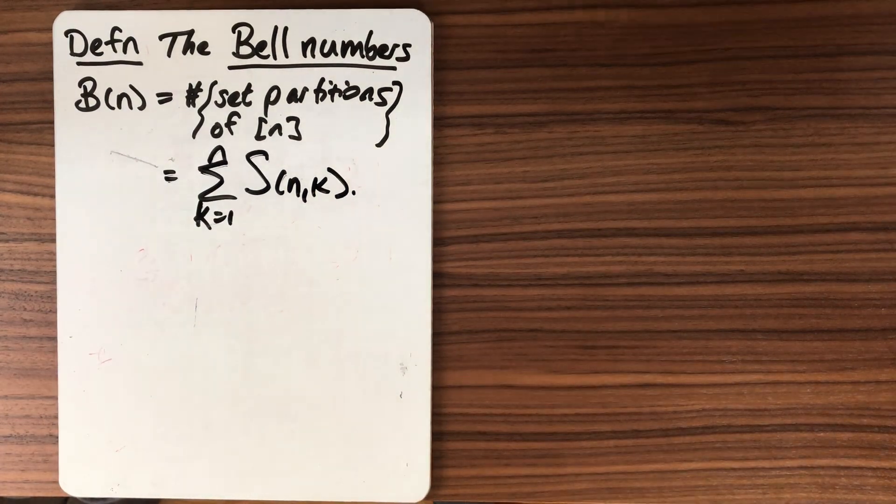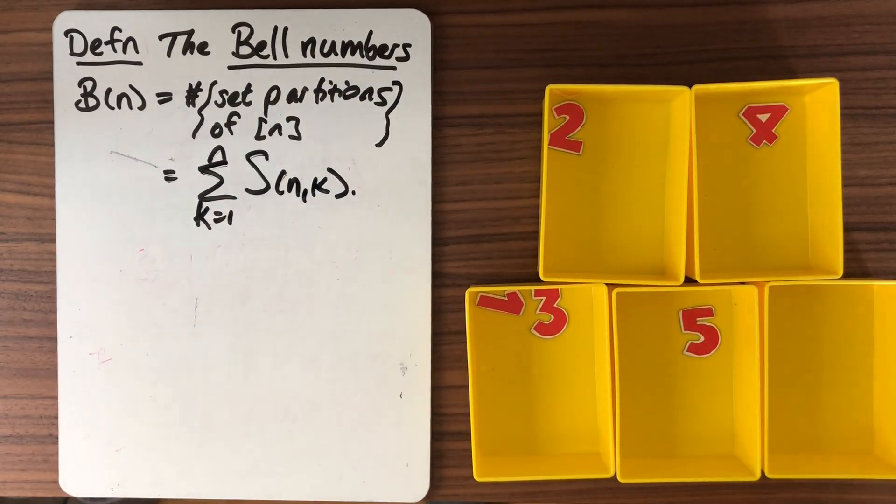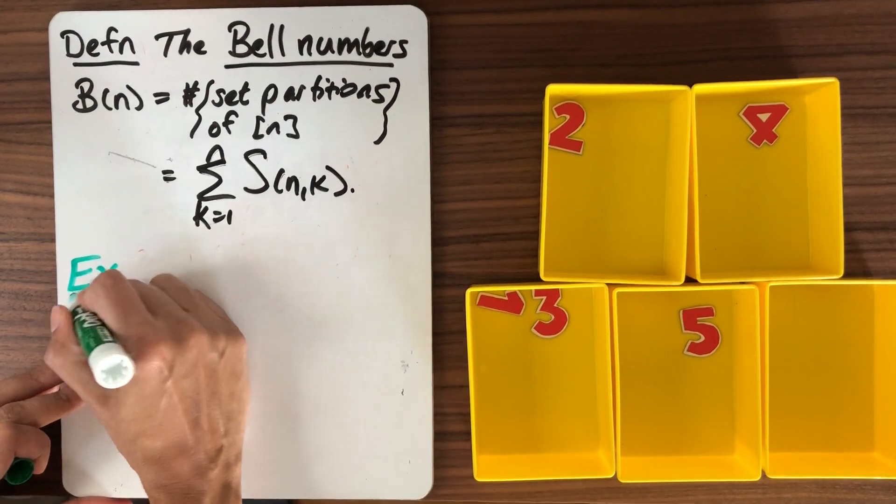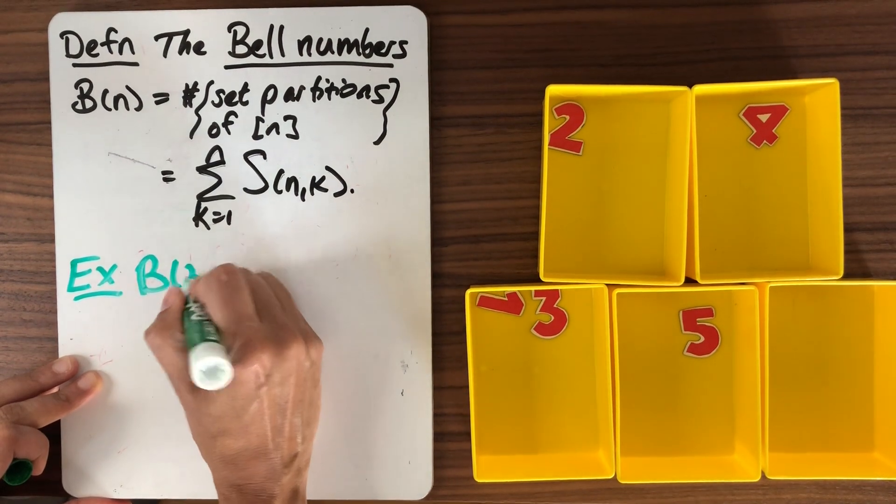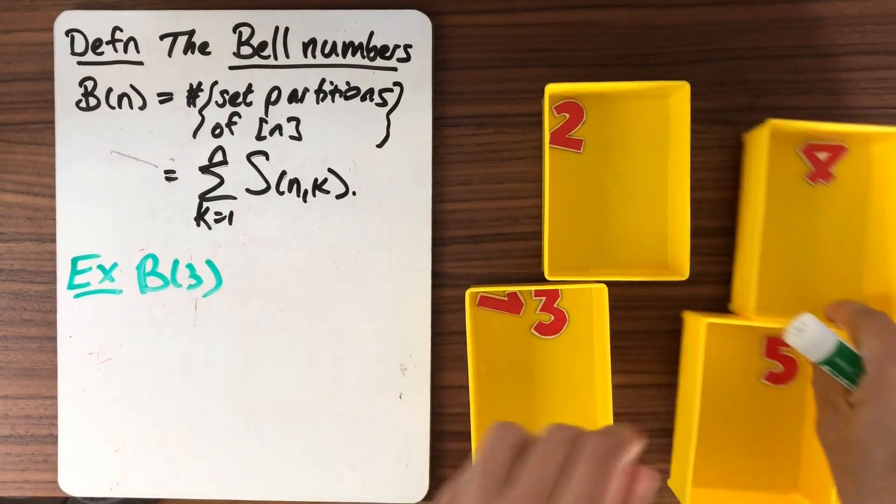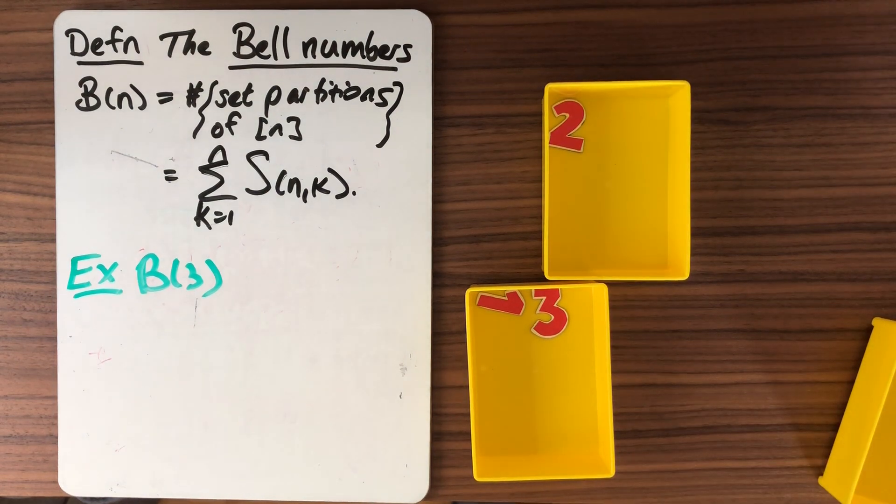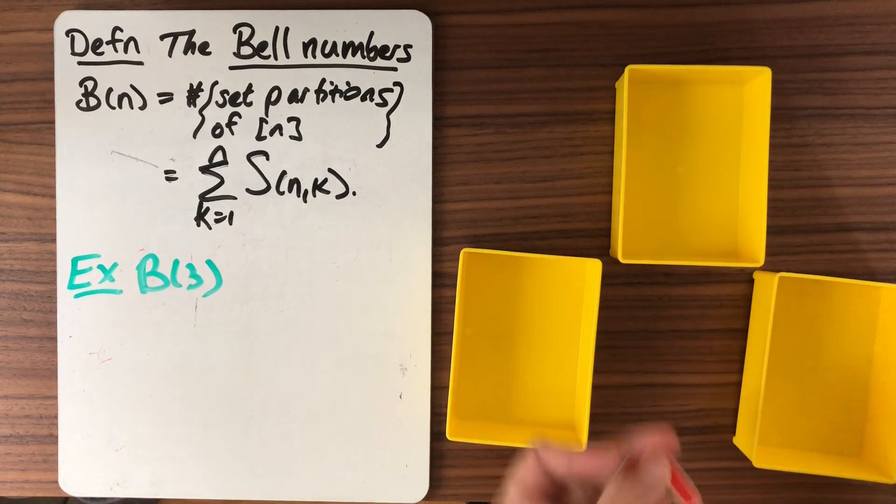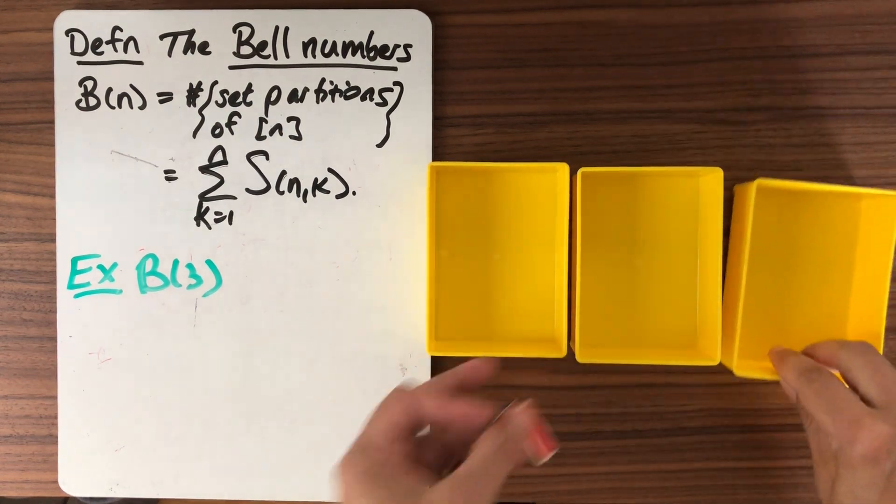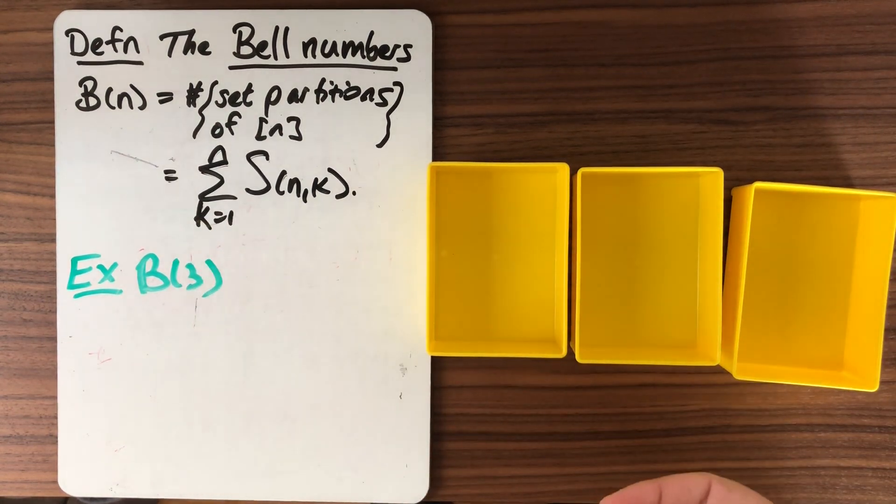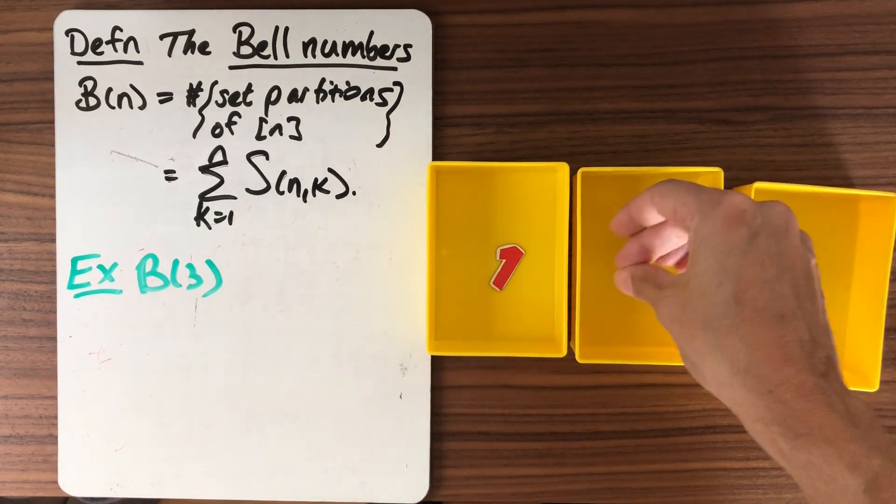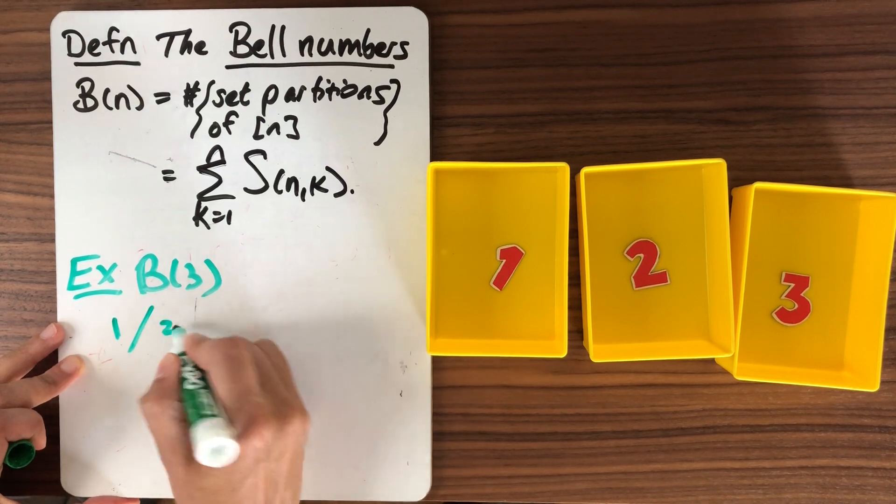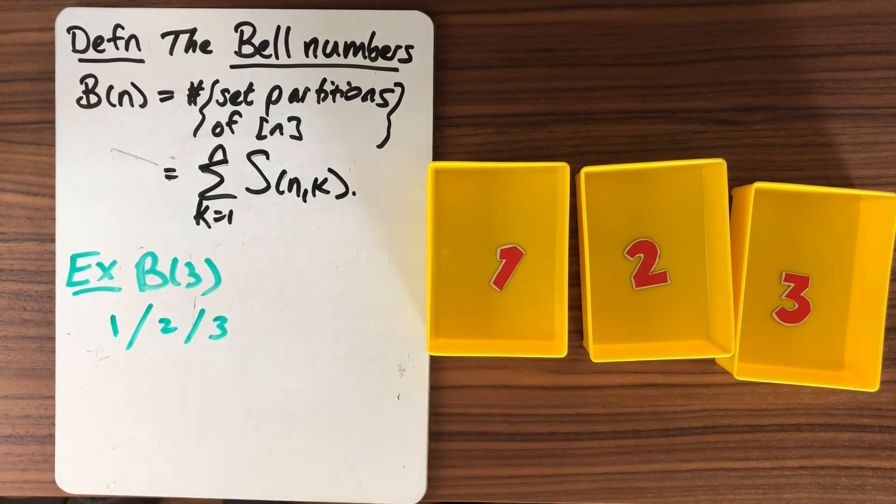So let's do that. Let's bring our blocks back. And let's do an example. So let's try to compute B(3). Because anything more than that gets a little onerous. So we'll take these guys away. And we've got 3 blocks. Let's see what we can do with them. Remember that we can leave the blocks empty now, because we're allowing ourselves to have any number of blocks.